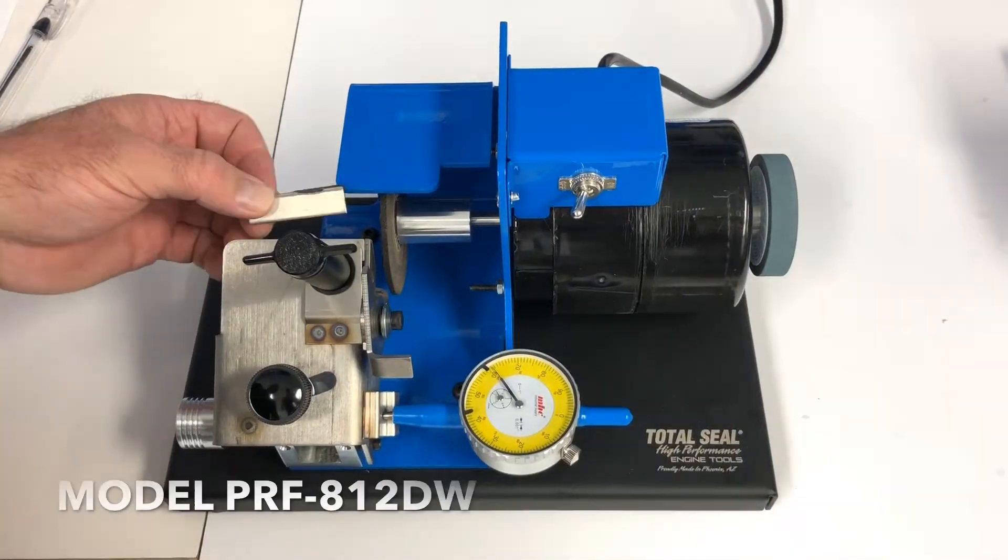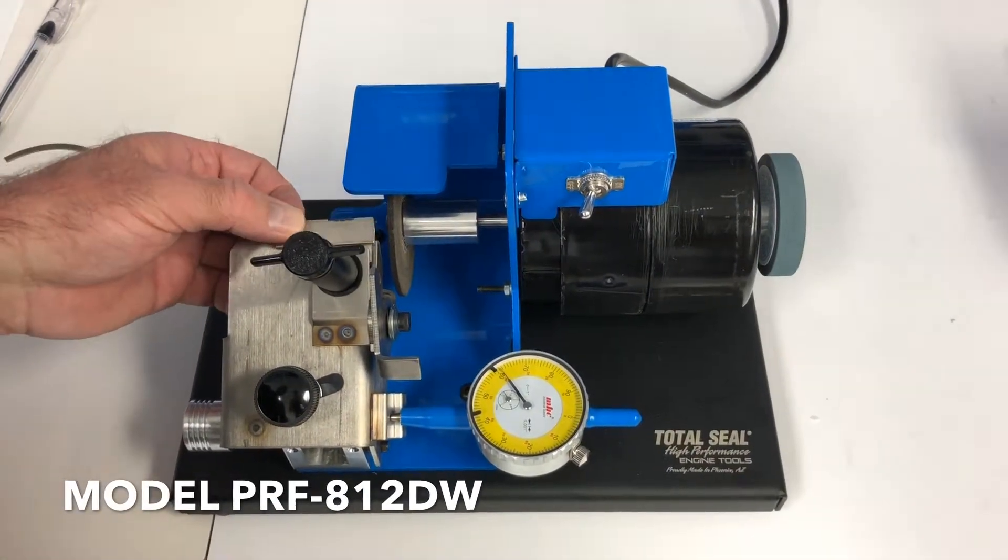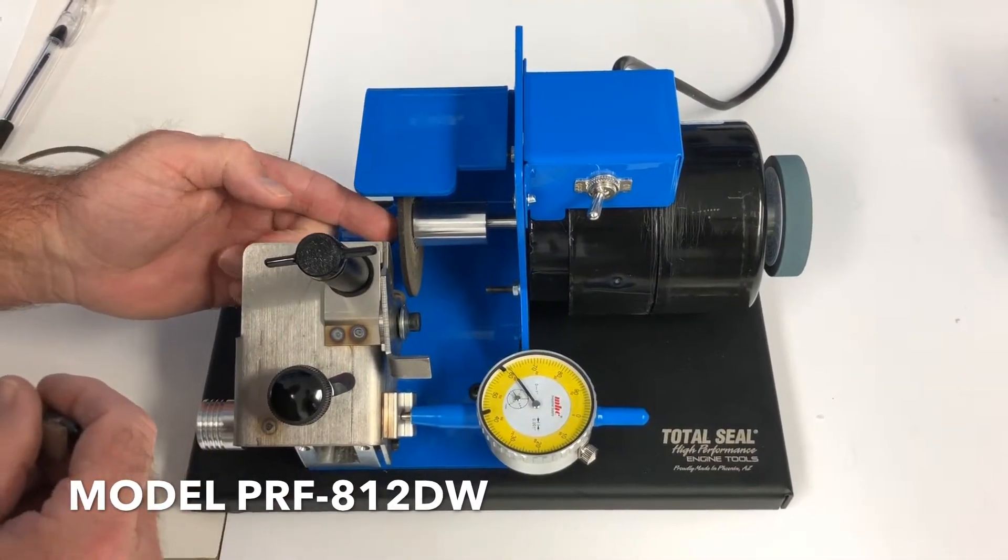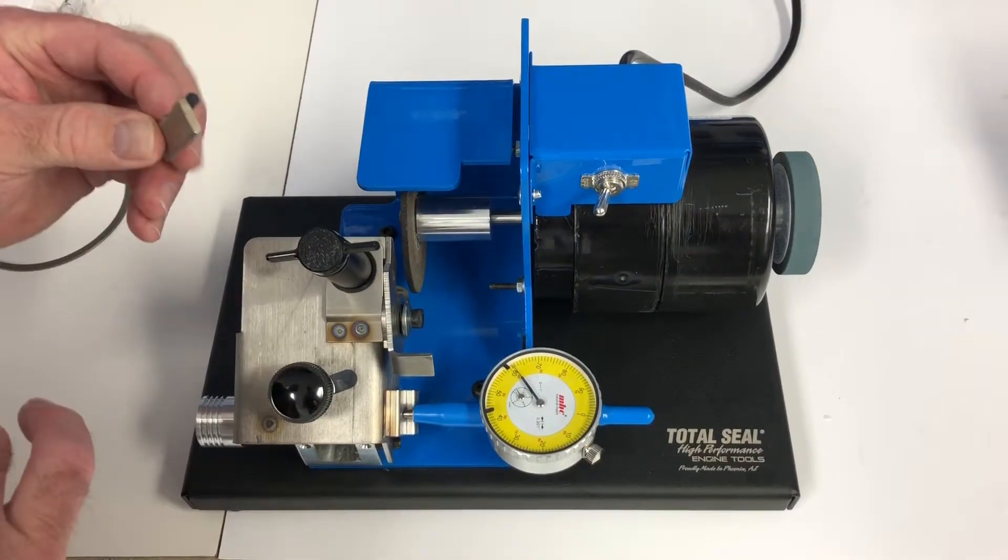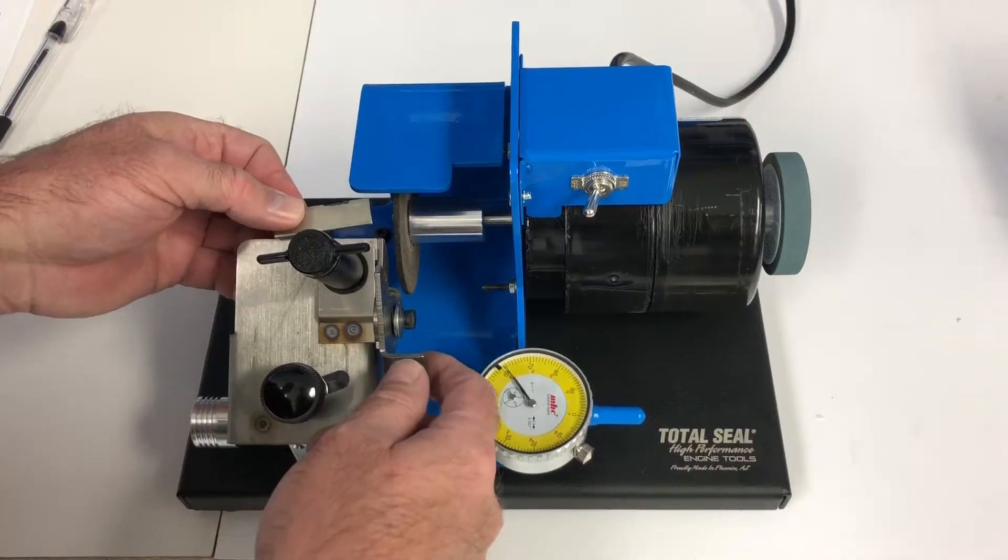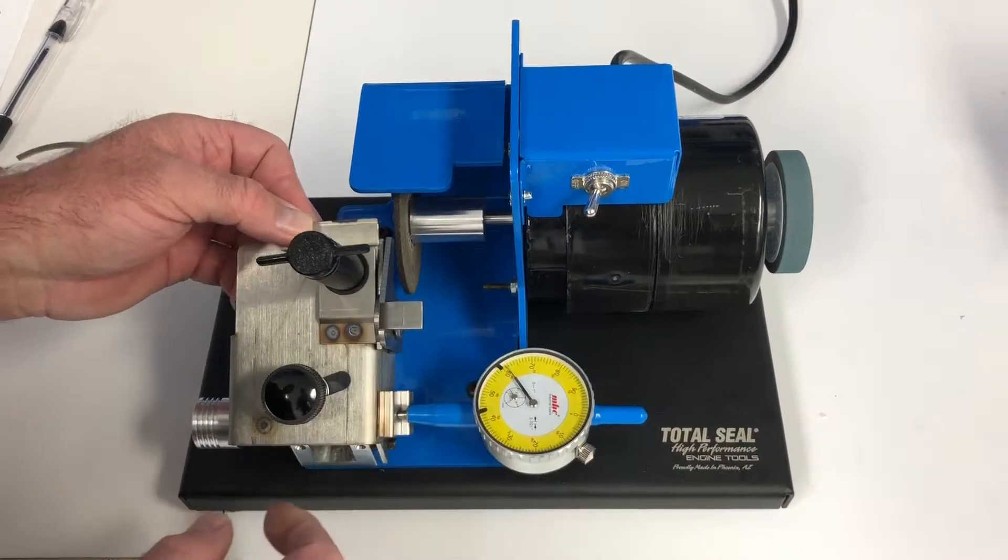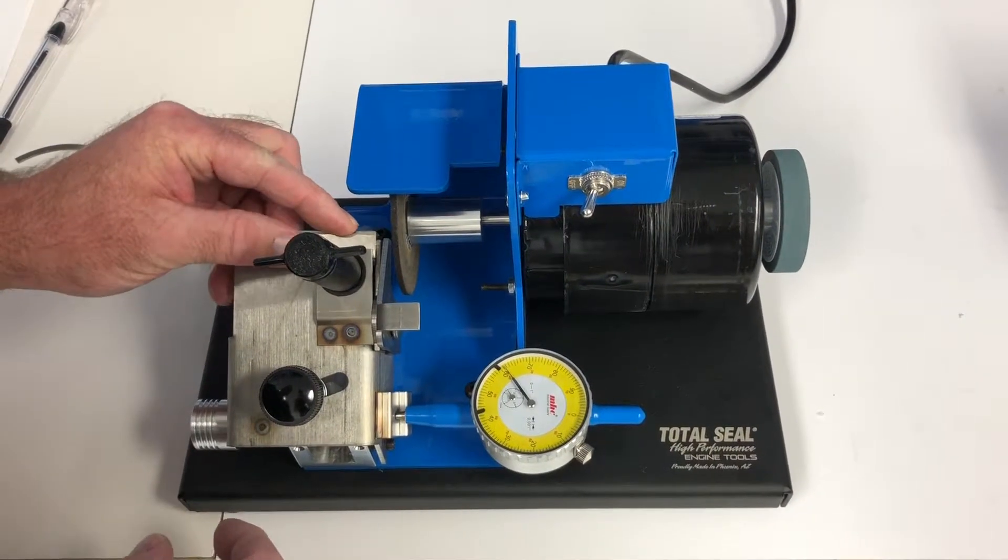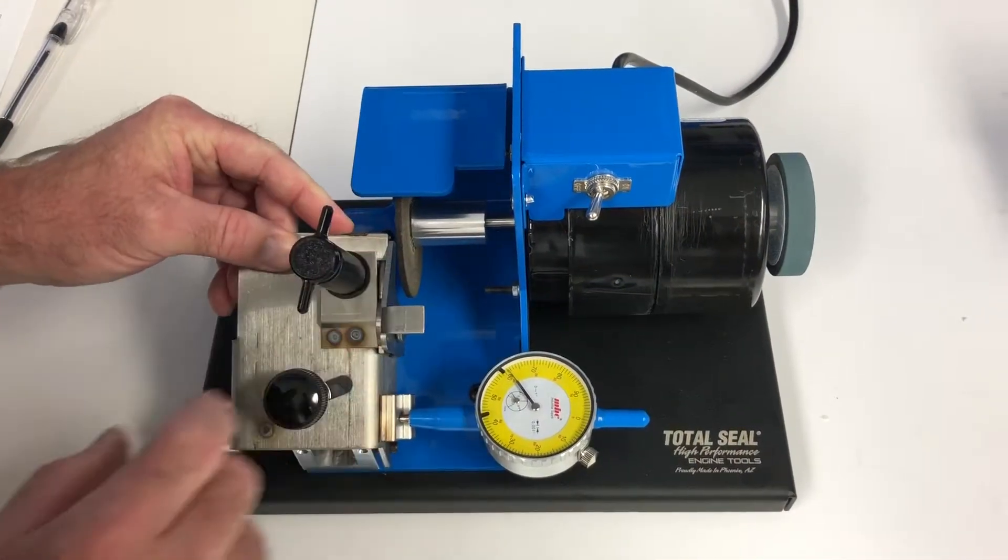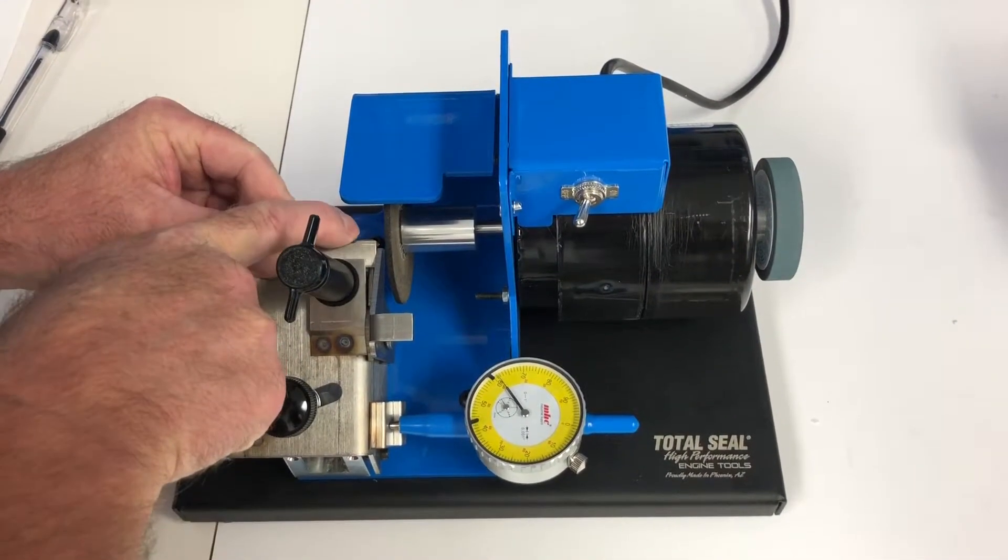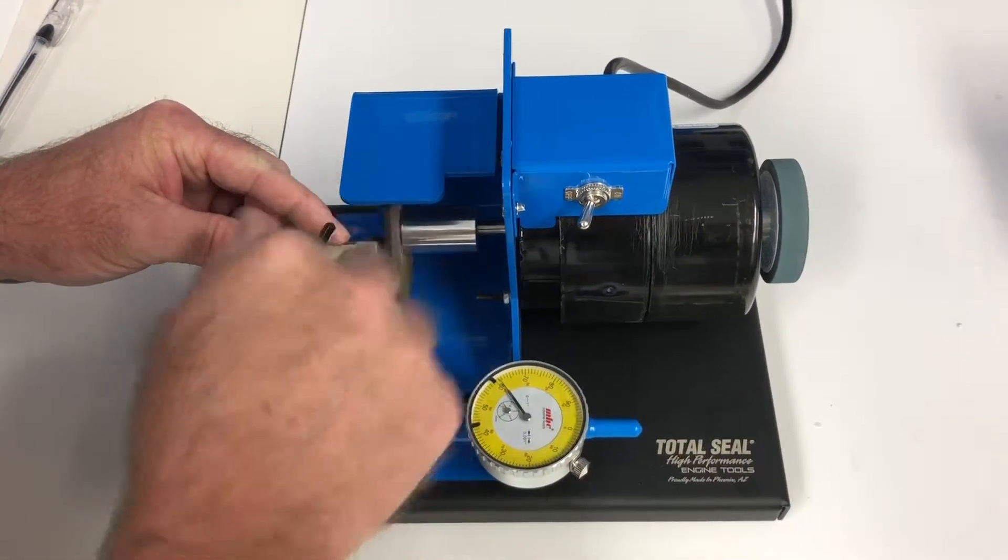Okay, the first step in using our power ring filer is you must square the cutting wheel. You use the diamond dresser which is this piece here. Rotate the squaring stop down, slide that across in and down here and across that and then you lock it down.